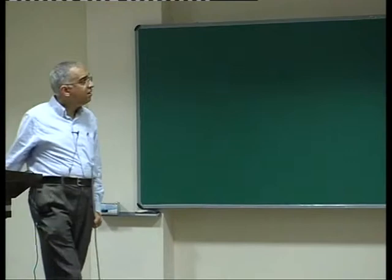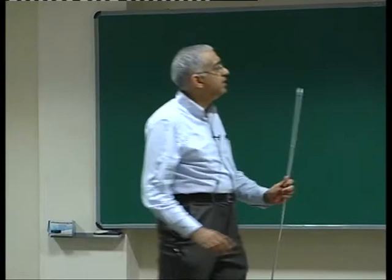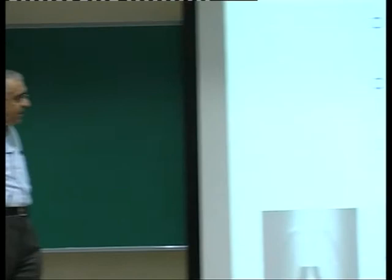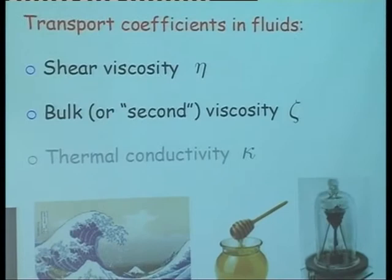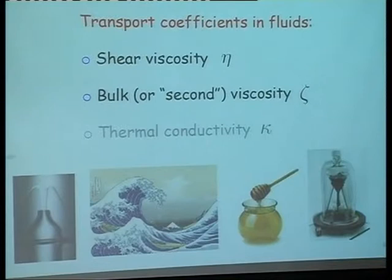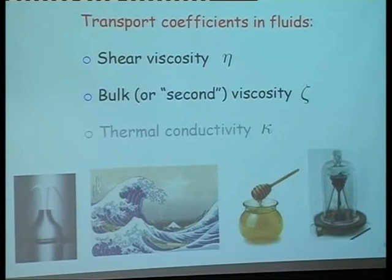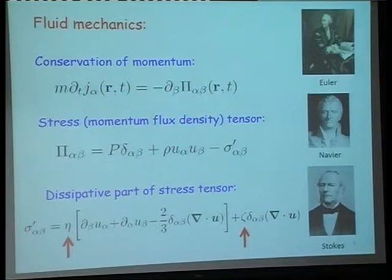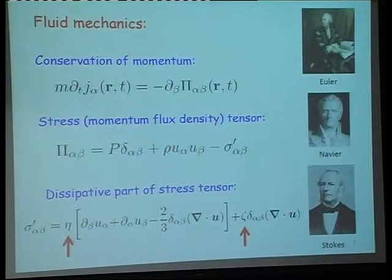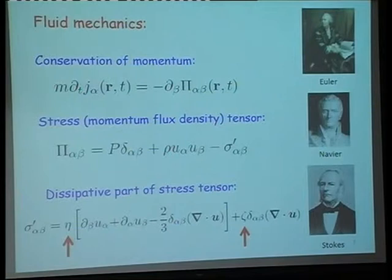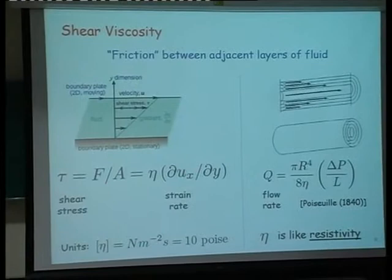Since the cold Fermi gases that I am going to talk about are neutral fluids, the transport coefficients in such neutral fluids are the shear viscosity eta, the bulk viscosity zeta, and the thermal conductivity kappa. Much of the work that has happened, at least at the moment, both in experiment and theory, is without thermal gradients, so I will not talk about thermal conductivity and focus just on the viscosity. The viscosity first appeared as a phenomenological parameter in the celebrated Navier-Stokes equation, where these two coefficients eta and zeta appear, and they basically give rise to dissipation when you have a fluid flow.